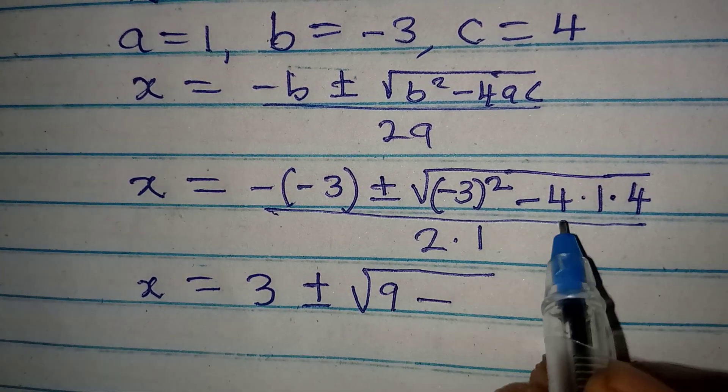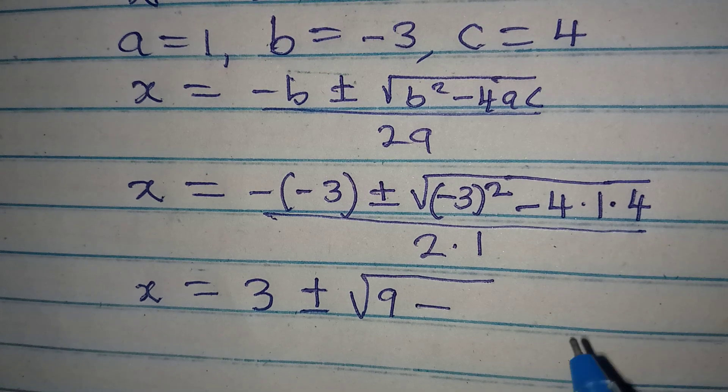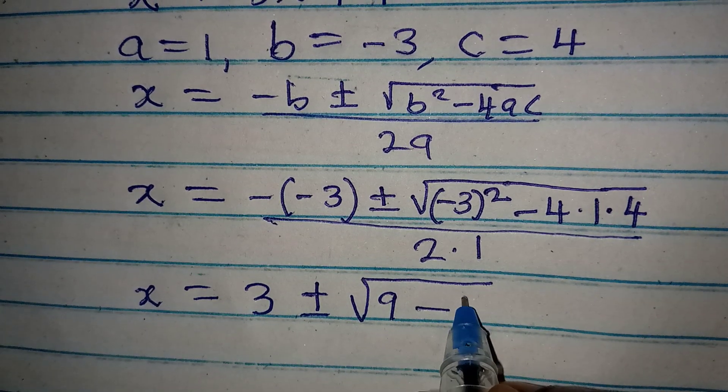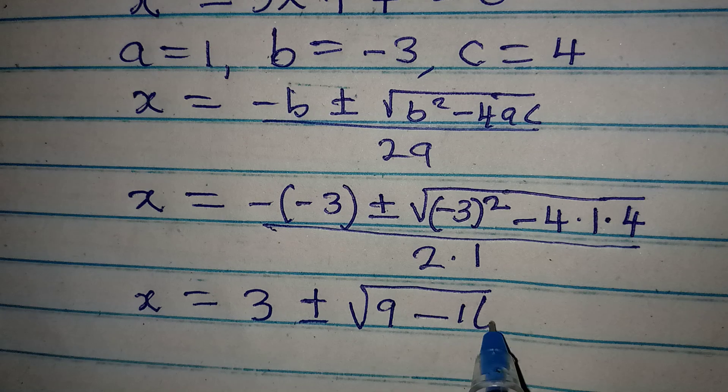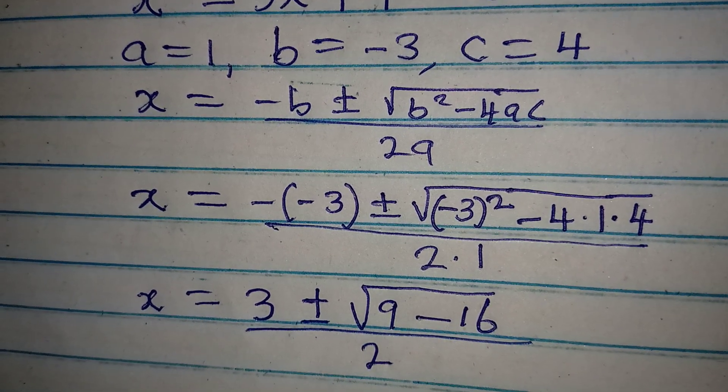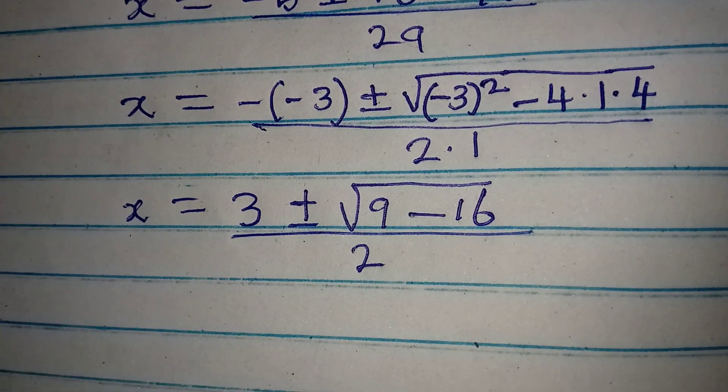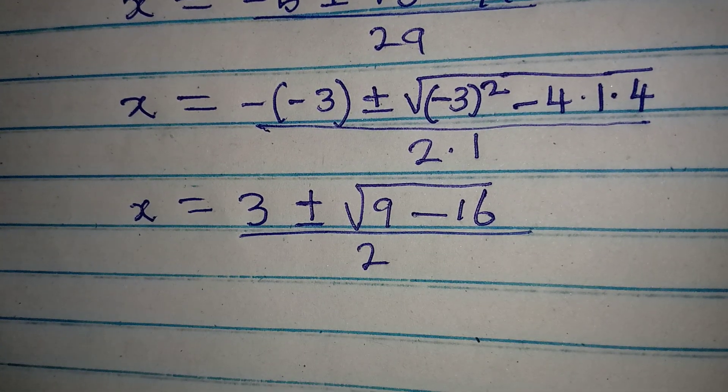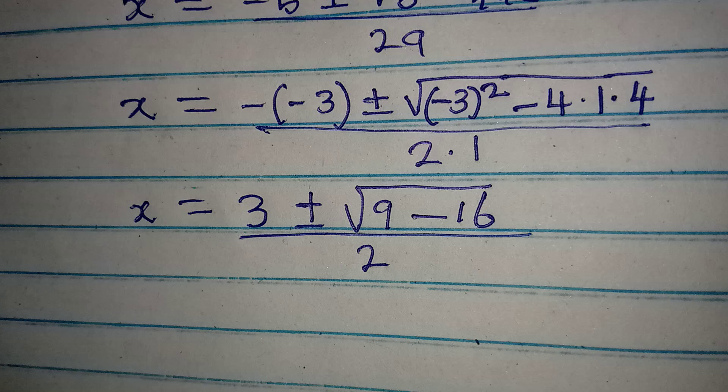Then, minus 4 times 1 times 4, so this will give us 16. Now, we have this over 2. Remember, I said this was going to give us a complex solution, because we are getting a negative square root.